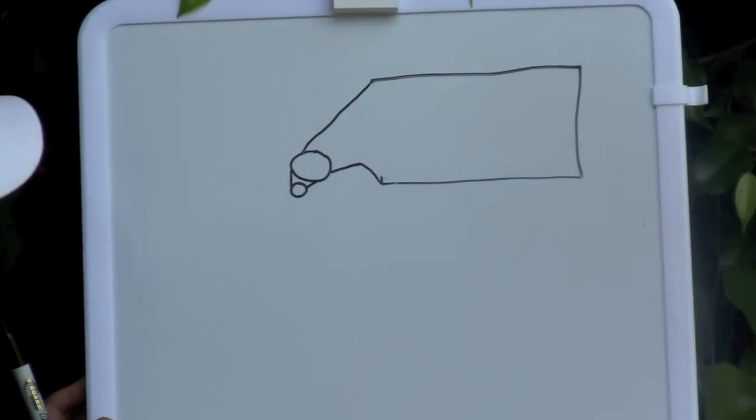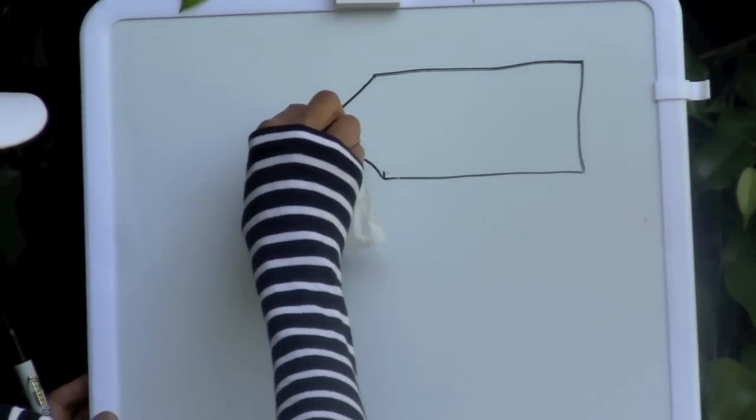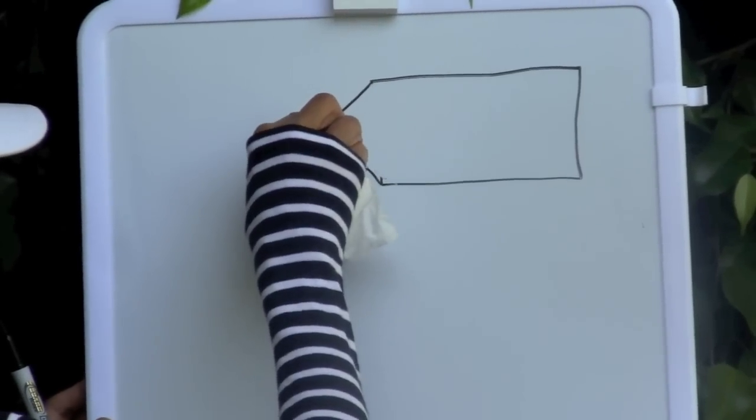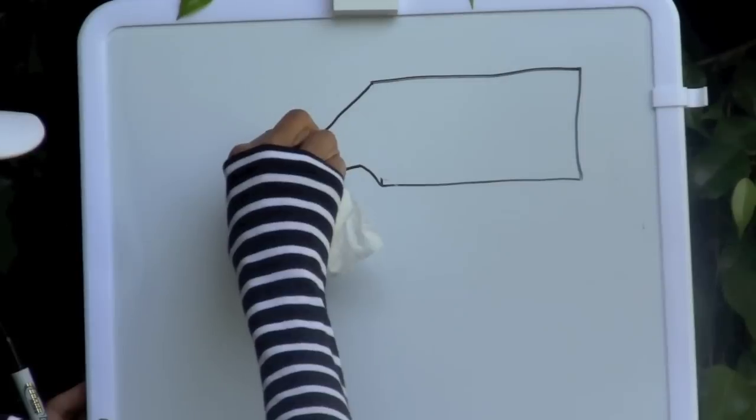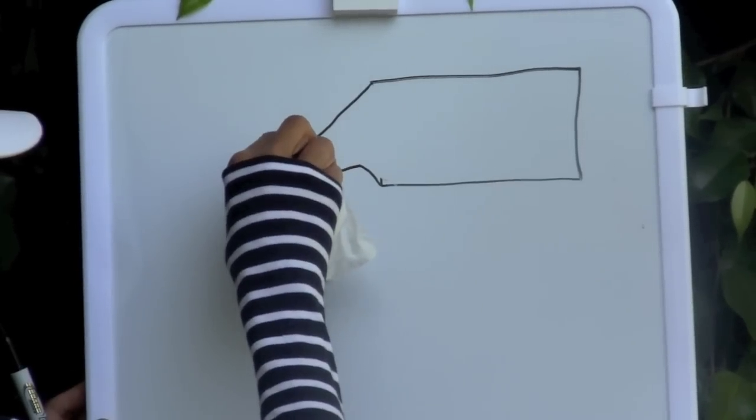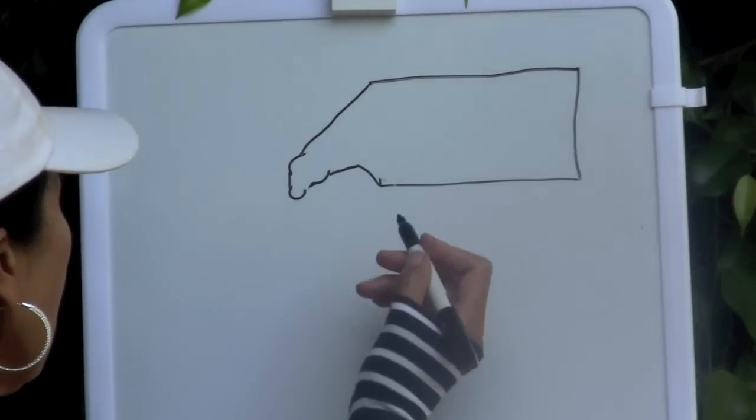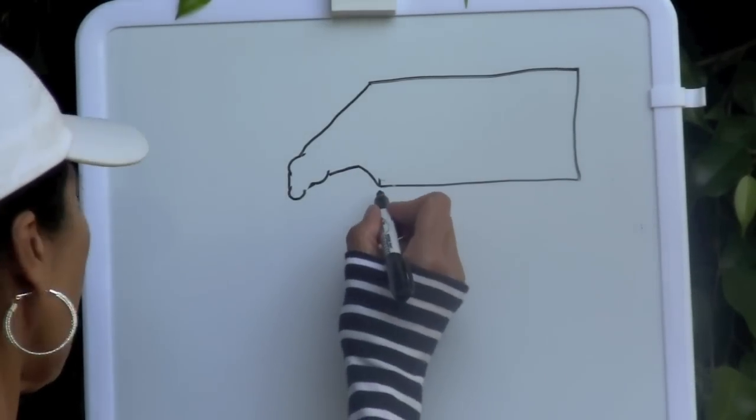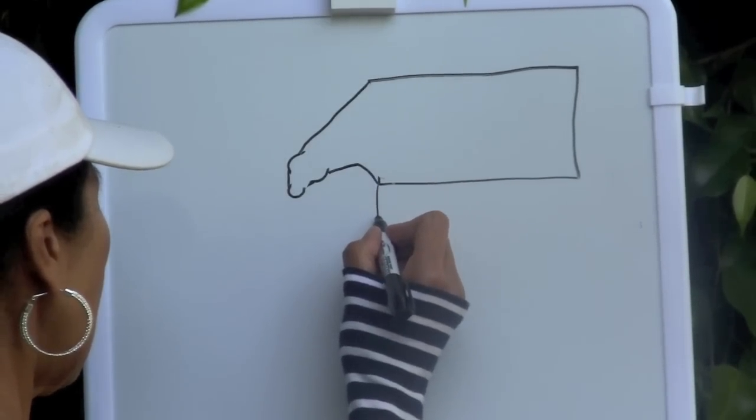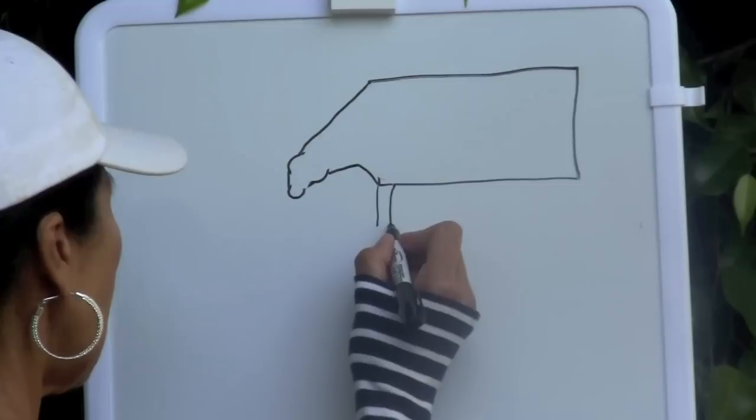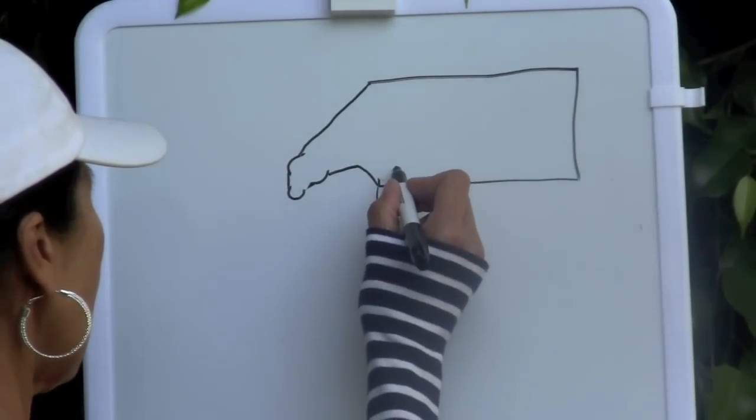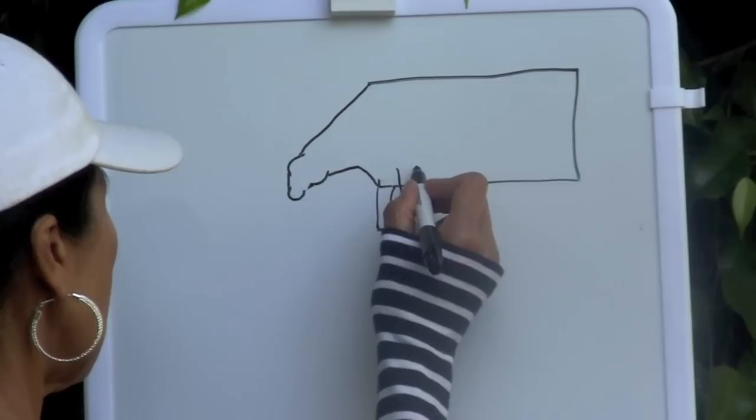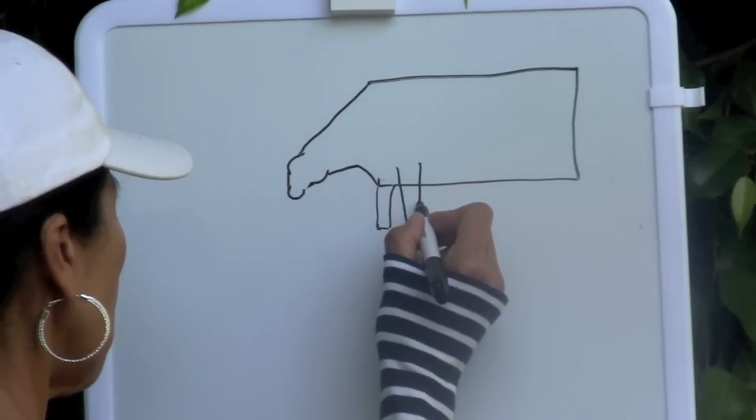Now get your eraser and erase the inside lines. There, now we are going to draw the legs. A cow has four legs, and boys and girls, I want your child to draw these legs all the same length.